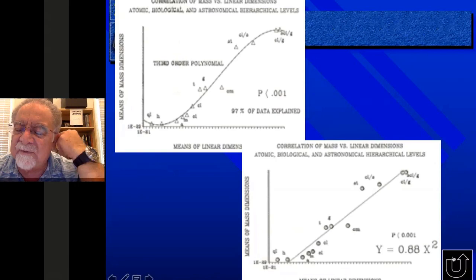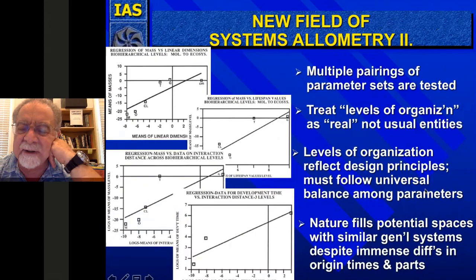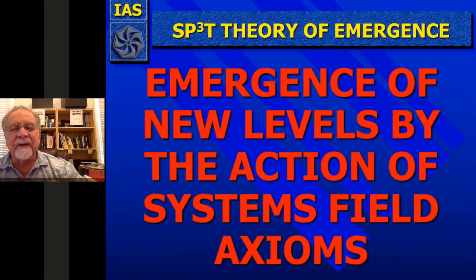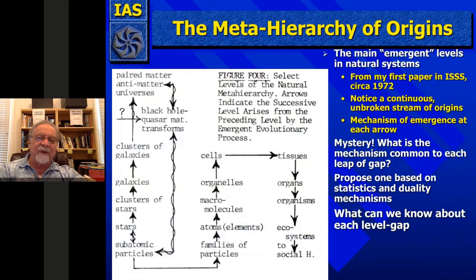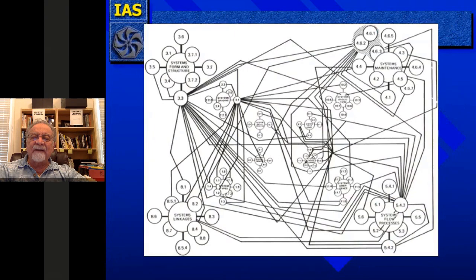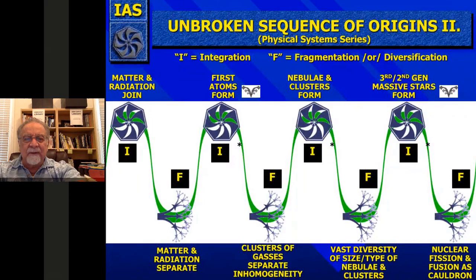So you get this new field of systems allometry from this kind of data. It follows naturally that the unbroken sequence of systems origin is because of the action of systems field axioms. This is the original diagram I made of the meta-hierarchy of origins in the 1972 paper — my first paper for ISSS, which did win the far-west regional meeting's best paper for the year. It shows the beginning of what I was thinking for systems processes theory as well as for the meta-hierarchy.